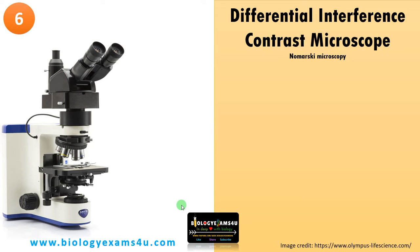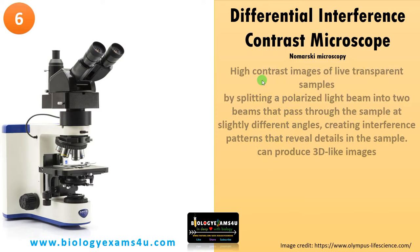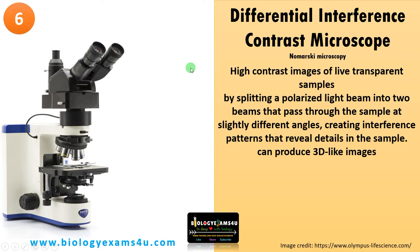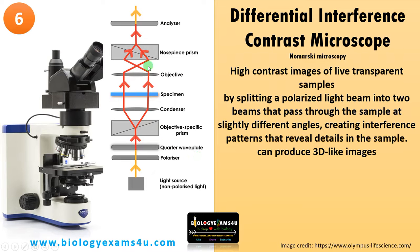Sixth in the list is the differential interference contrast microscope, also called the Nomarski microscope. It is a special type of phase contrast microscope that provides high contrast images of live, transparent samples. A beam polarizer is used — the light beam splits into two beams that pass through the sample at slightly different angles, creating interference patterns that reveal details of the sample.